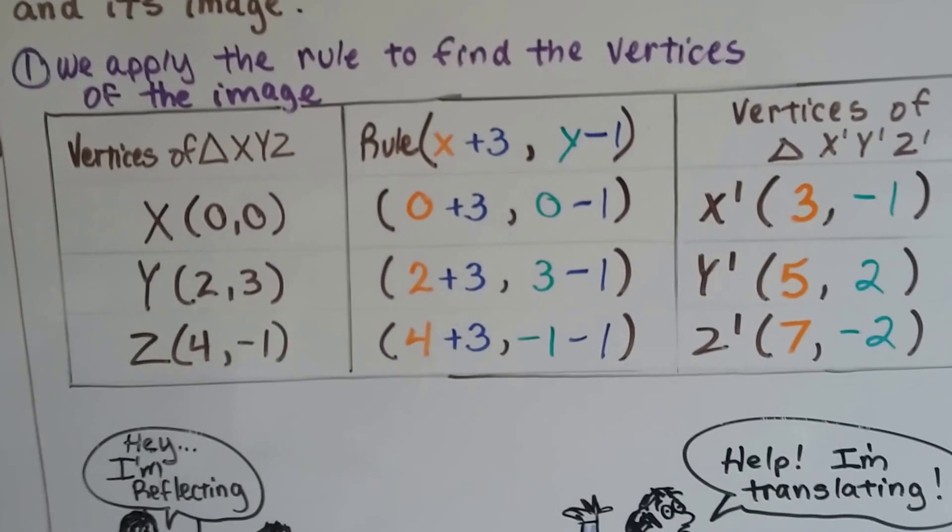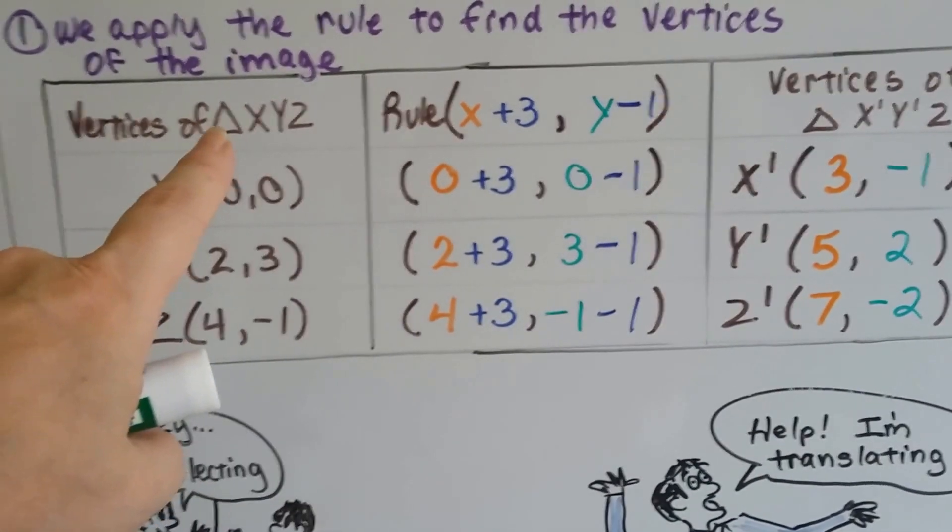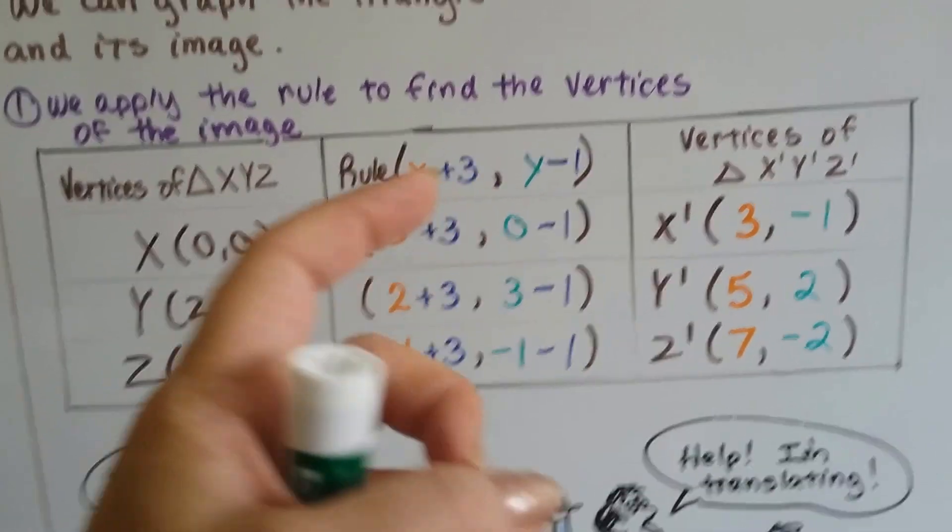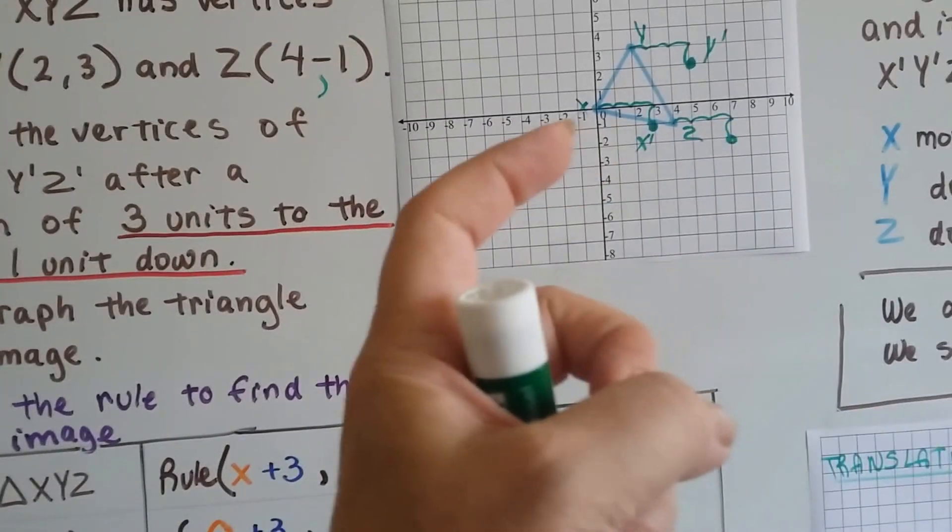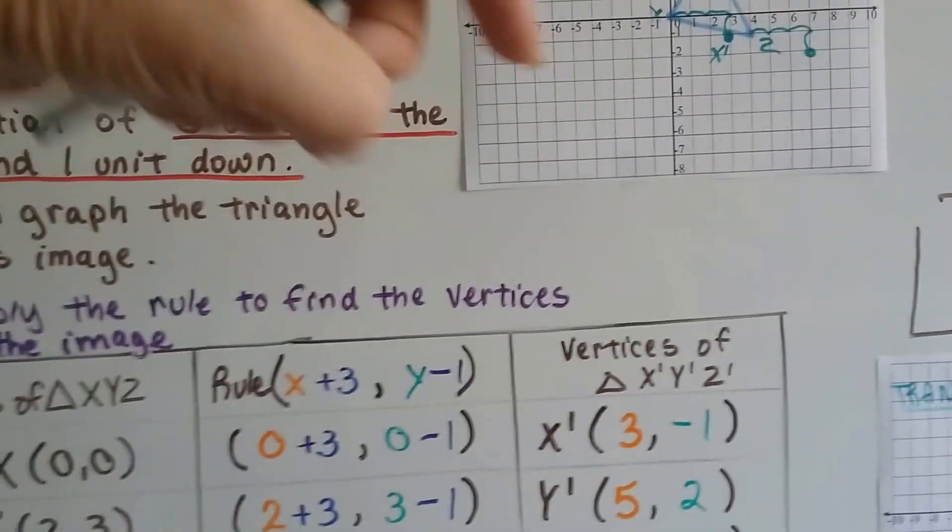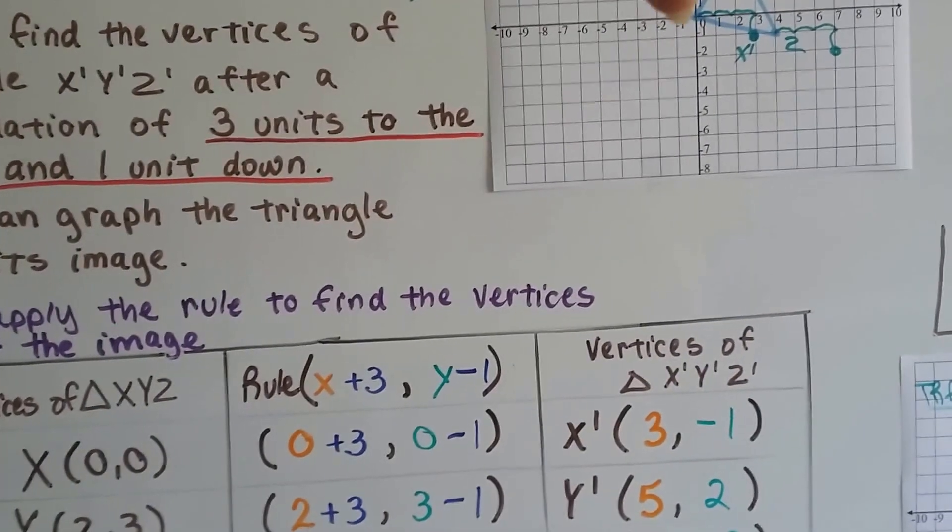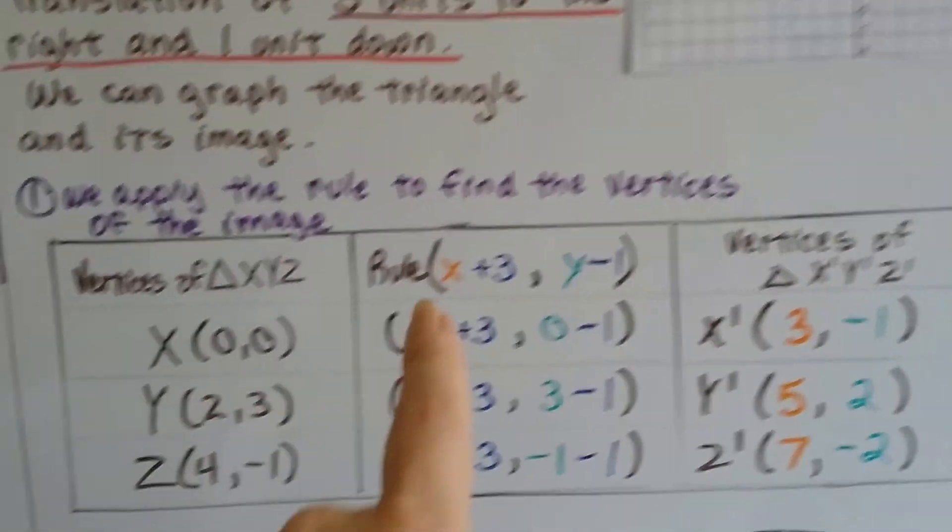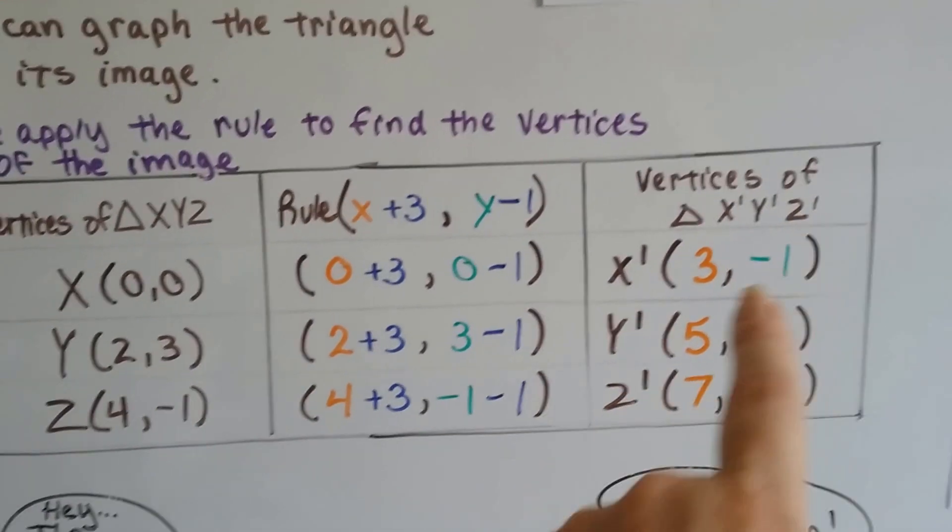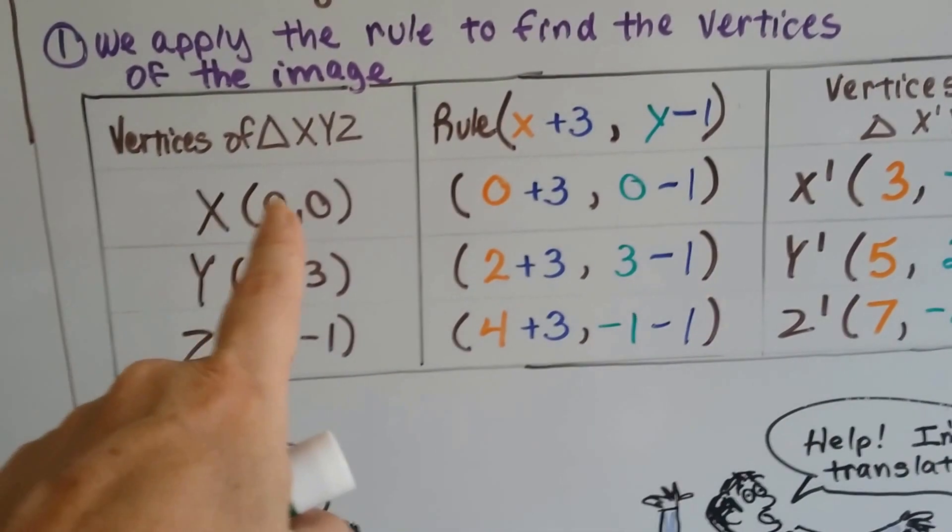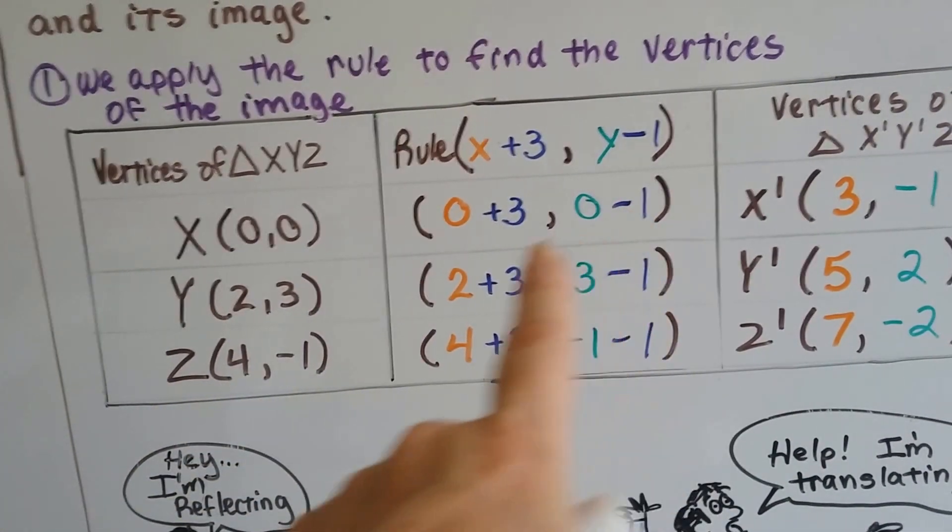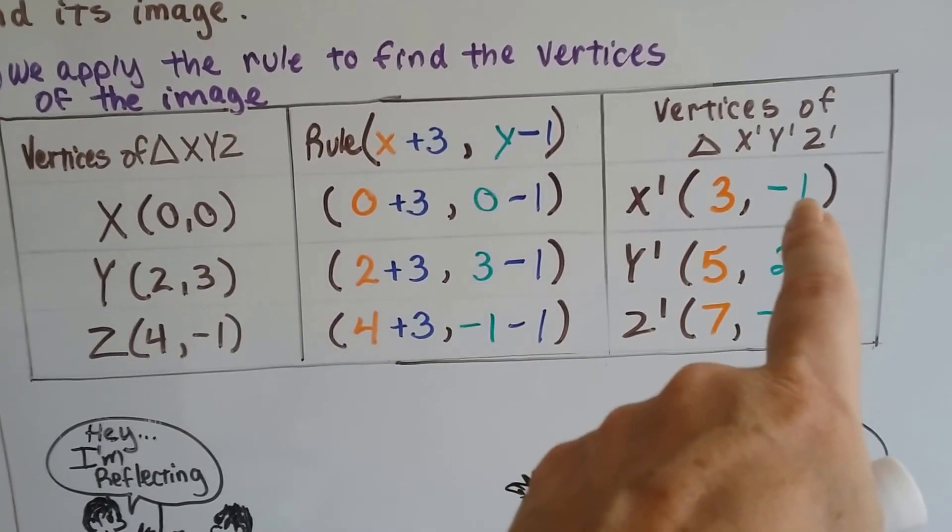Well, how we do it algebraically is these are the vertices of triangle. Remember, when you see a little shape of a triangle like that, it means triangle X, Y, Z. And here's our rule. We have to go 3 to the right. So that's 3 positive, right? Because as we go this way, the numbers are getting bigger. We're going positive. So we're adding. And Y is going to be going down one unit, and that's going into the negative. So we're subtracting. So X is going to add 3, and Y is going to take away 1. So the vertices of triangle X prime, Y prime, Z prime are going to follow. So if X is at 0, 0, we're going to add 3 to the 0 for X, and we're going to take away 1 for the 0 for Y. That's going to give us a 3 and a negative 1.